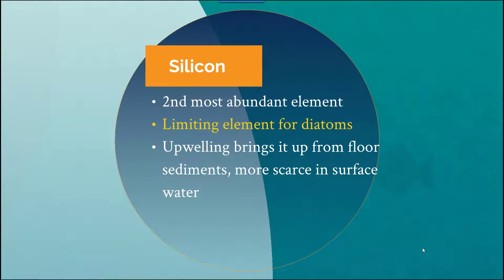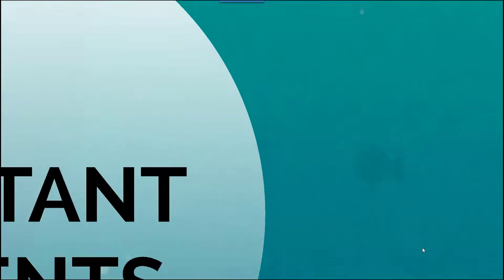Silicon is the second most abundant element and the limiting element for diatoms, which are an organism whose population is limited by this particular substance. Upwelling tends to bring silicon up from the floor sediments, and it is more scarce in the surface water.